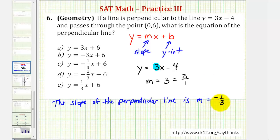From here we have half the information we need. We now know that the equation of the perpendicular line would be y equals negative 1/3 x plus b, where b is the y-intercept.